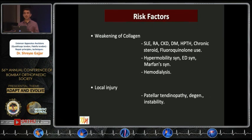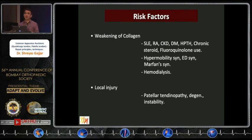Looking at the quadriceps tendon and the patellar tendon in isolation, there are certain common risk factors. One could divide these into conditions which cause weakening of collagen, which include SLE, RA, CKD, and diabetes, to name a few; hypermobility syndromes such as Ehlers-Danlos syndrome and Marfan's; and also patients undergoing hemodialysis. The second group would be those subjected to some form of local injury, with underlying tendinopathy of the patella, degeneration, or possible instability.